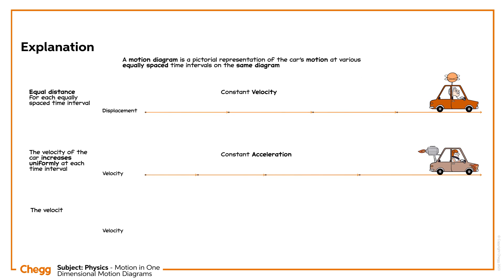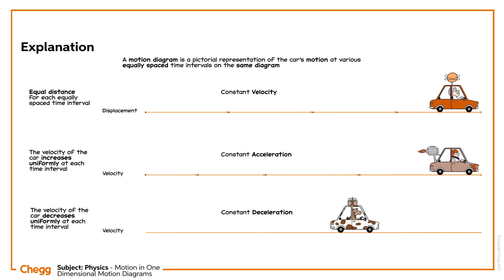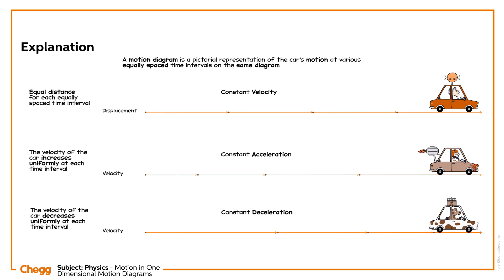The velocity of the car decreases uniformly at each time interval when the car is decelerating at a constant rate. Its motion diagram looks like this. These are the basic motion diagrams to understand the motion of the car in one dimension.